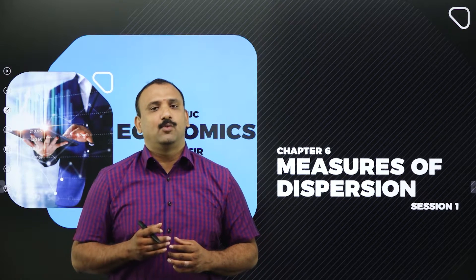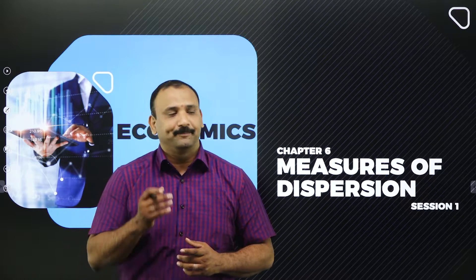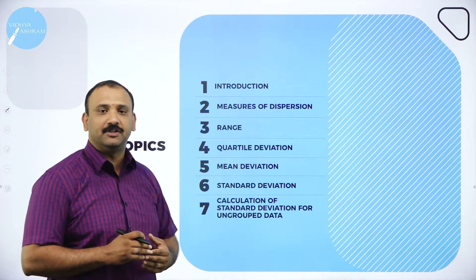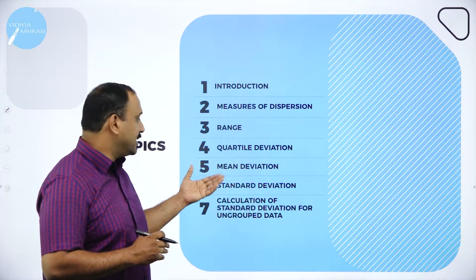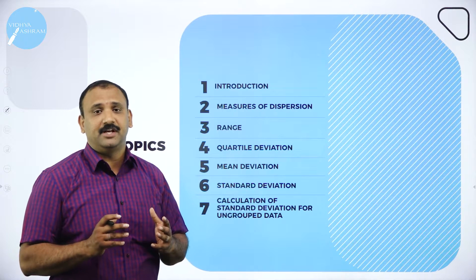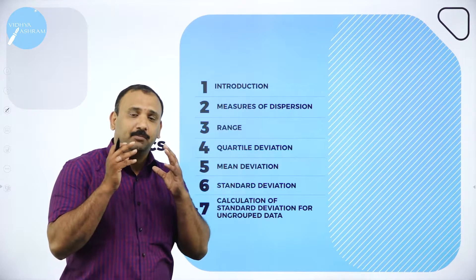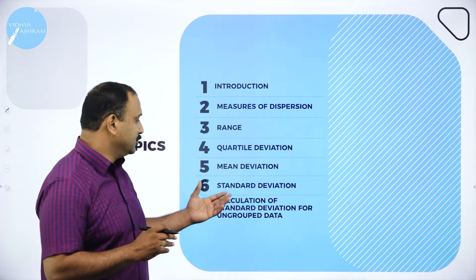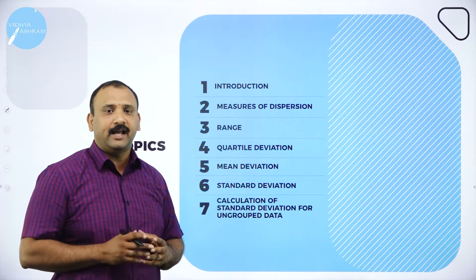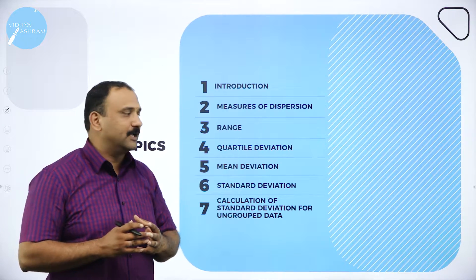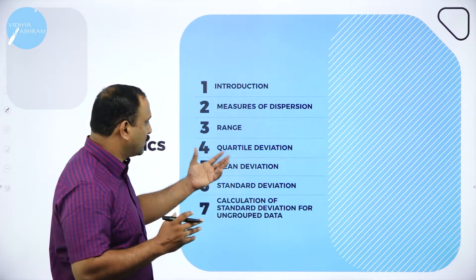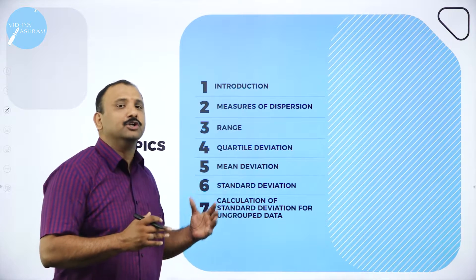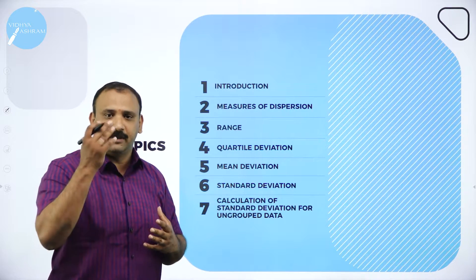Moving forward, let's see what topics we are going to cover today. We will cover the introduction, then move to measures of dispersion: range, quartile deviation, mean deviation, and standard deviation — a very important term and the most important part of statistical application. We will also look at calculations for standard deviation using ungrouped data, including quartile mean, which was covered in the previous chapter.